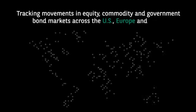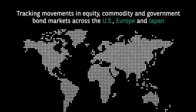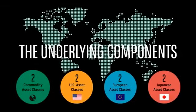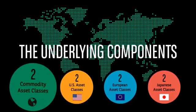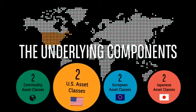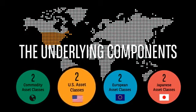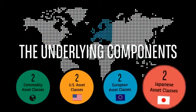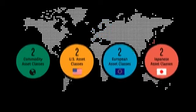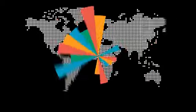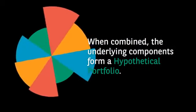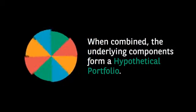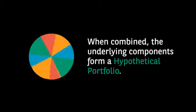The indexes that cover a range of diverse asset classes and regions that form the MAD5 index, together known as the underlying components, track movements in equity, commodity, and government bond markets across the US, Europe, and Japan. When combined together, the underlying components form what is called a hypothetical portfolio.